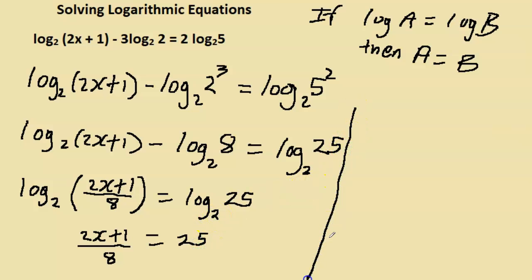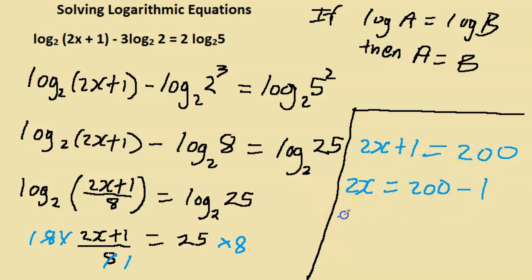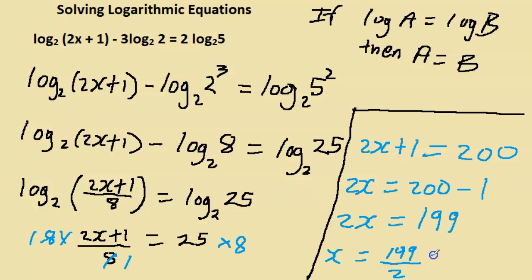We need to get rid of the denominator of 8, so we multiply both sides by 8: 2x plus 1 equals 200. Subtracting 1 from both sides: 2x equals 199. So x equals 199 divided by 2. Since 200 divided by 2 is 100, this comes out to 99.5.